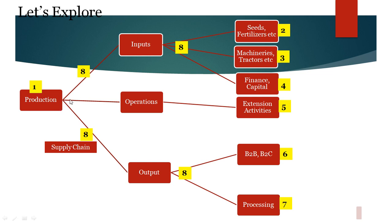Now, for production, there is a need for inputs. Again, inputs in agriculture have three verticals, which are seeds, fertilizers, machineries like tractors, and capital or financial services.